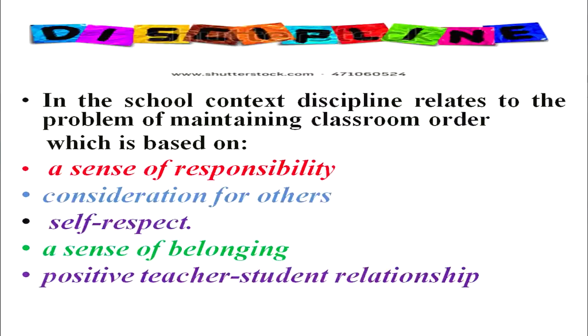Classroom order is based on: a sense of responsibility — the student should have a sense of responsibility for classroom jobs or for their own studies; consideration for others — the student should take care of others; self-respect — if we respect ourselves, only then can we respect others; a sense of belongingness — if we feel associated with the prevailing environment; and a positive teacher-student relationship to bring positive outcomes.